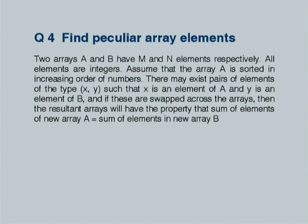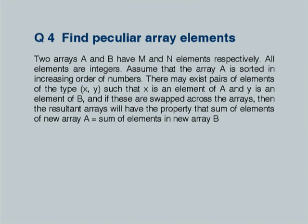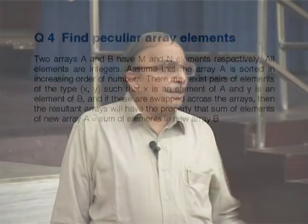We move to the next problem where we have two arrays A and B, each having M and N elements respectively. All elements are integers. Incidentally, one of the arrays has been sorted — array A has been sorted. The question is: there may exist pairs of elements in the two arrays such that if you sum up all elements in the first array you get sum1, and the second sums to sum2, and sum1 and sum2 are normally distinct. There might exist a pair — one element in each array — such that if you swap them, both arrays total to the same value. You want to find out whether such elements exist and if they do, discover and print them.